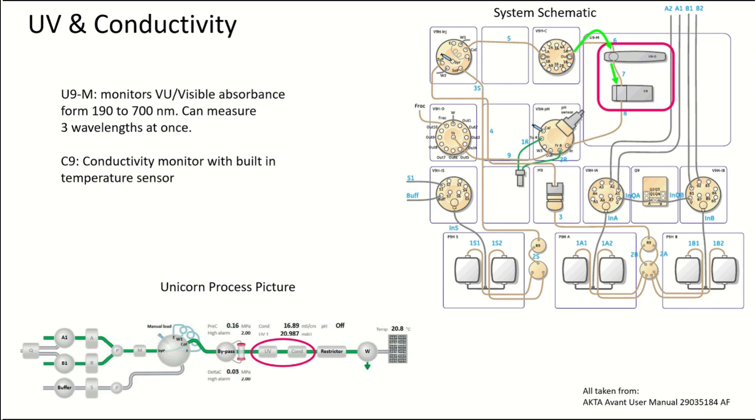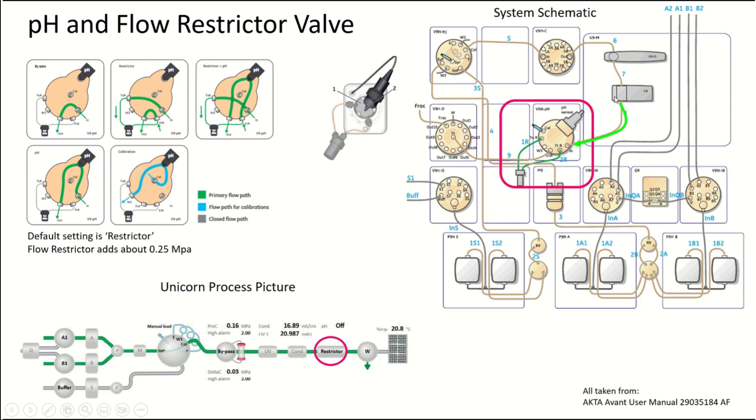The conductivity monitor has a built-in temperature sensor and is right after the UV monitor. After that, we have a pH and flow restrictor valve, which is very convenient. Its default position is with the restrictor on and the pH sensor off. The flow restrictor adds about 0.25 megapascals, and this depends on the type of chromatography you're doing, the flow rate you're running at, and if you have an Avant 150 or a 25.